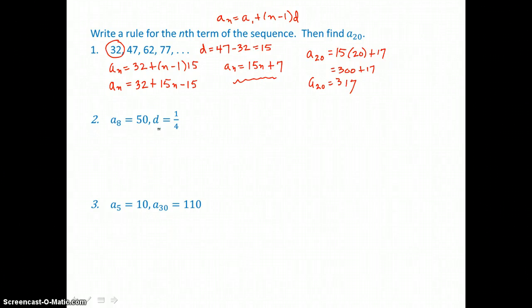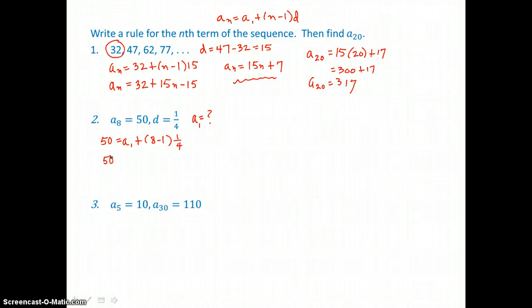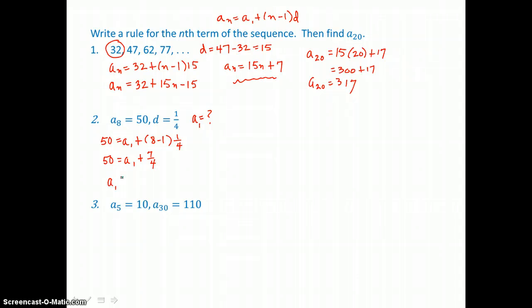In problem 2 we're given the 8th term and the common difference. To write a rule we need the first term, so we use our nth term rule: 50 equals a sub 1 plus 8 minus 1 times the common difference of 1 fourth. Simplifying: 7 times 1 fourth is 7 fourths, so we subtract 7 fourths from both sides. Writing 50 as 200 fourths and subtracting 7 fourths gives us a first term of 193 fourths.